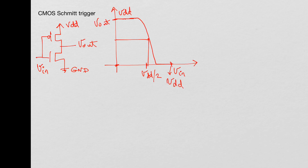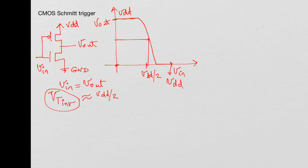When V-in is equal to V-out, that is called the threshold voltage of the inverter. This is not the threshold voltage for the NMOS or PMOS, but the threshold voltage for the inverter, and this is usually close to VDD/2 if the inverter is designed properly.